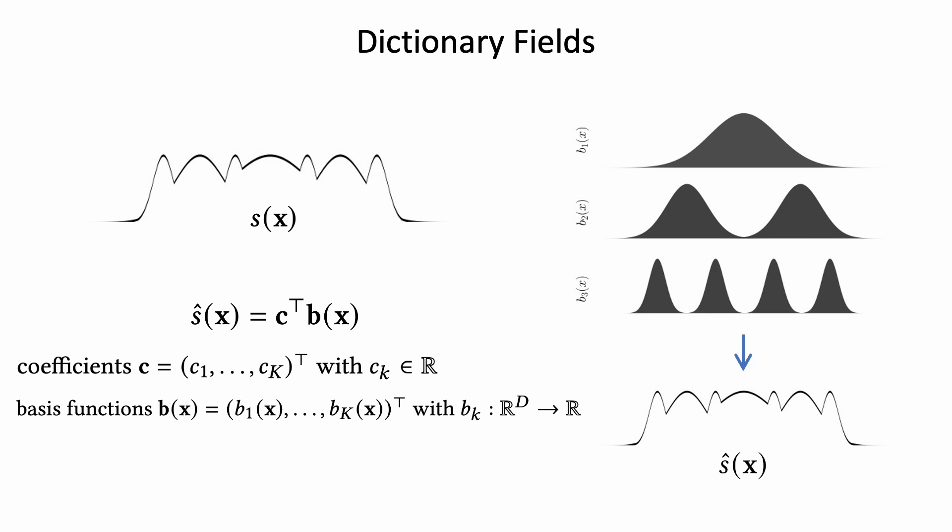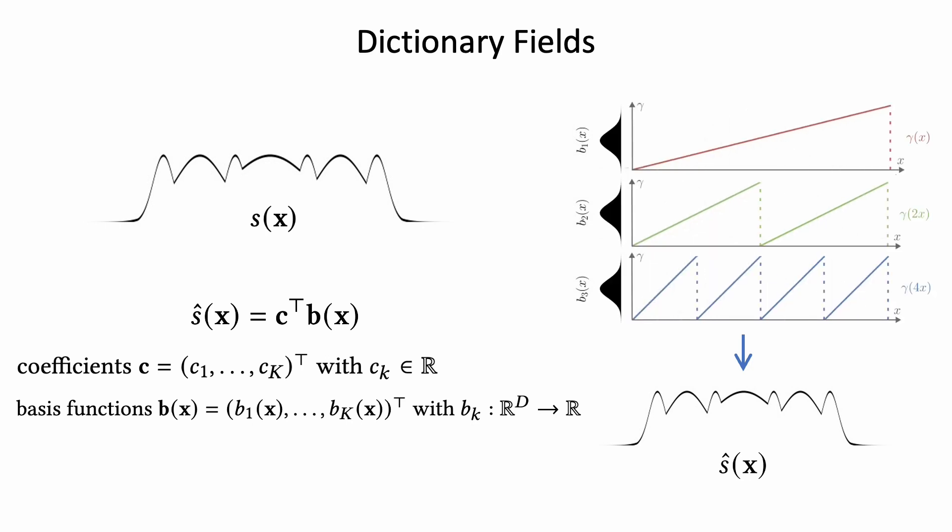However, representing the signal Ŝ(x) using a global set of basis functions is inefficient as information cannot be shared spatially. We assume that signals are not random but structured and hence share similar signatures. Therefore, we propose to share the basis across regions.